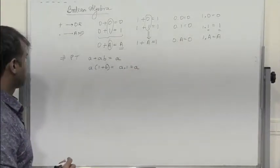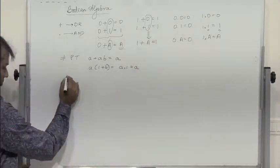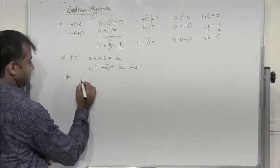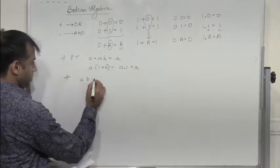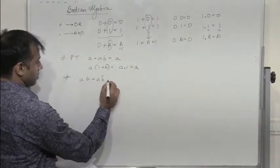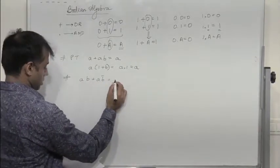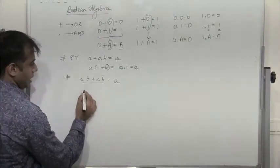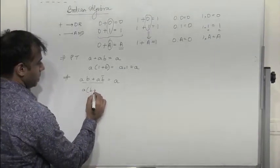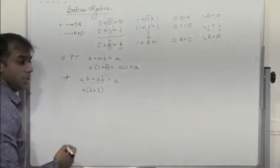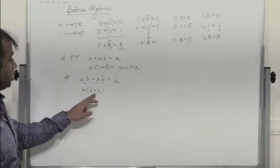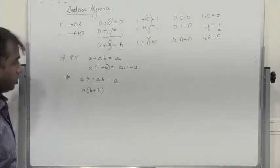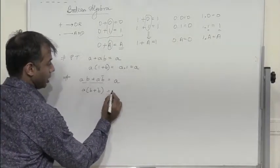Next, prove that AB plus AB bar equals A. Take A common: we have A(B plus B bar). B plus B bar — if B is 0, B bar is 1; if B is 1, B bar is 0 — so this is 1. So we get A.